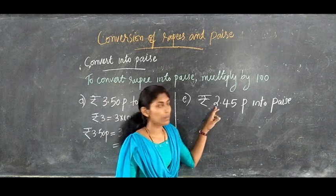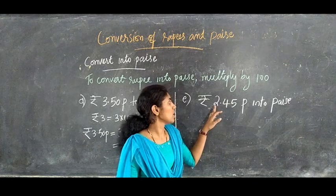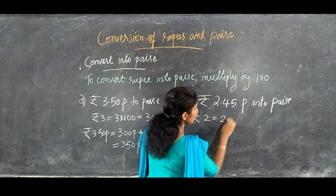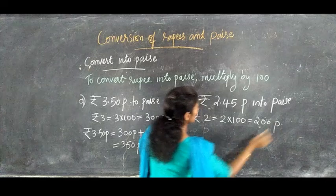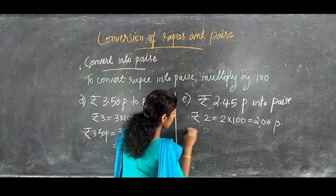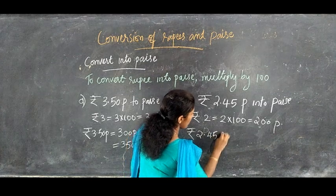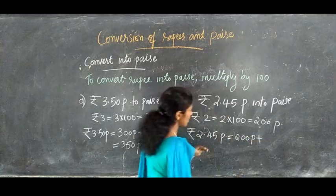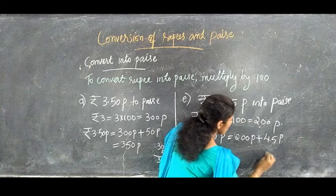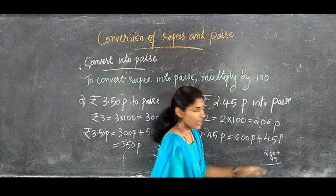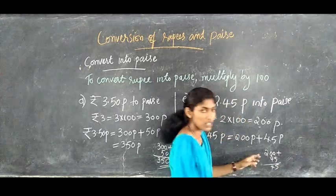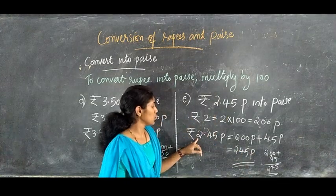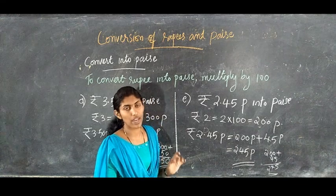Next, convert 2 rupees 45 paisa to paisa. First, convert rupees 2 to paisa: 2 into 100 equals 200 paisa. Then, 2 rupees 45 paisa equals 200 paisa plus 45 paisa. Adding 200 plus 45 gives 245 paisa. So 2 rupees 45 paisa equals 245 paisa.